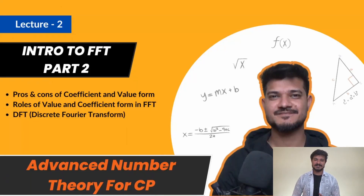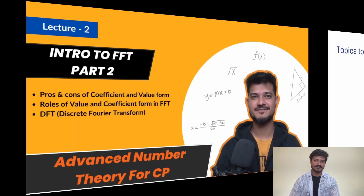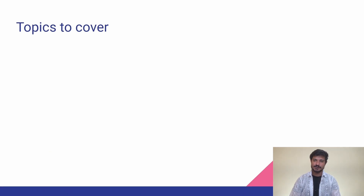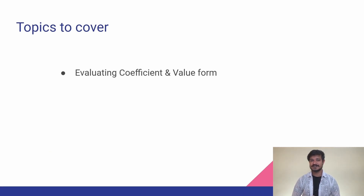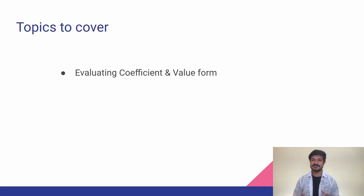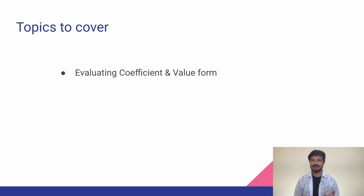Hello guys, this is Code and Code, and this is the second lecture of FFT — Introduction to FFT Part 2. Let's see what topics we are going to cover in this lecture. We'll start with evaluating the coefficient and value form. In the last lecture we learned there are two different ways to represent a polynomial in memory: either using coefficient form or value form. We'll learn how to evaluate both of these forms and also see how they fit into FFT.